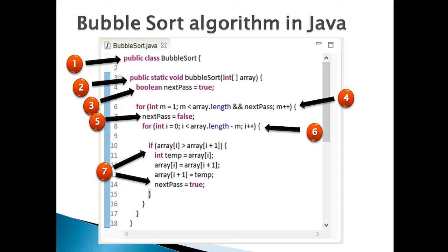Step 4: create a for loop having the value of integer m as 1 in the initialization step. The loop will traverse till the boolean condition is true. On each loop it checks whether the value of m is less than the length of the array and whether the next pass value is true or not. At last there is an incremental step which increments the value of m by 1 over each loop. Step 5: assign a value of false to the next pass variable. Step 6: create an inner for loop having the value of integer i as 0 in the initialization step. The loop will traverse till the boolean condition is true. On each loop it checks whether the value of i is less than the length of the array minus the value of m.